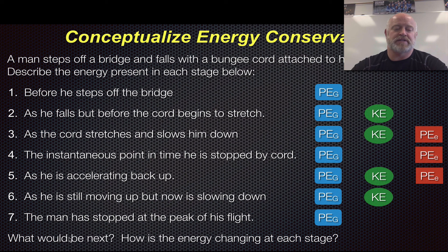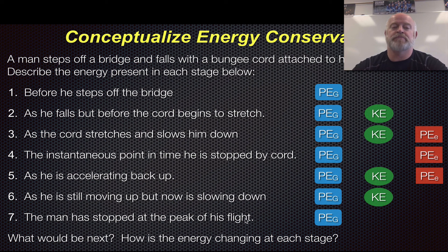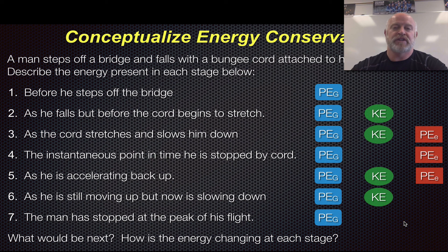Now the last two questions: what would be next, and how is the energy changing during each stage? After step seven, in theory, if he had no heat buildup, no deformation, no air resistance, nothing that happened there, he would go right back to where he was — he would literally come back up and stop right at the point where he stepped off the bridge. Because of heat and other things that never happens. So he won't get as high as the peak of flight. What would be next would be step two — step one and seven are identical — then two, three, four, five, six, seven, cycling over and over until all these energies got converted into heat or thermal energy.